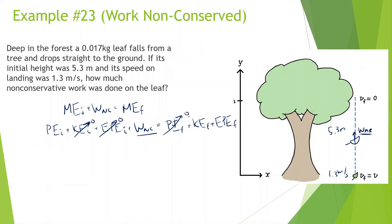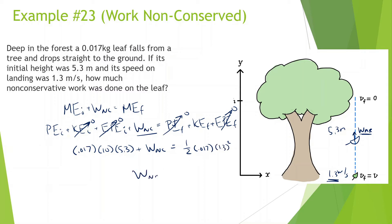At the end, is there potential energy? No, it's on the ground. Is there kinetic energy? Yes, it has a speed of 1.3 meters per second. No elastic potential energy. So: mass 0.017 times gravity 10 times height 5.3, plus work non-conserved, equals one-half times 0.017 times 1.3 squared. Solving: 1.3 squared times 0.017 times 0.5 minus 0.017 times 10 times 5.3 gives negative 0.89 joules.